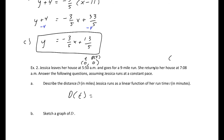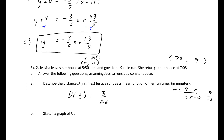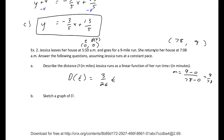That end time is actually 78 minutes — going from 5:50 to 6 is 10 minutes, plus 60 minutes to 7, plus 8 more is 78 minutes. Our slope is 9 minus 0 over 78 minus 0, which is 9/78, reducing to 3/26. The y-intercept is 0 because at time 0 the distance is 0.